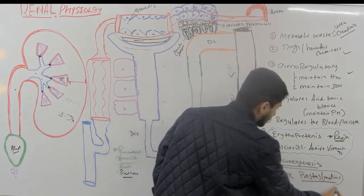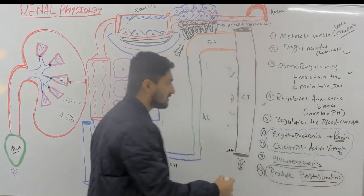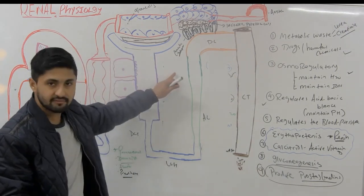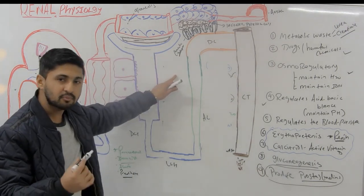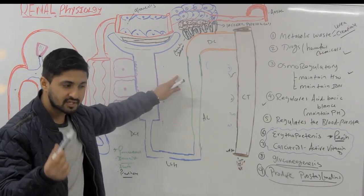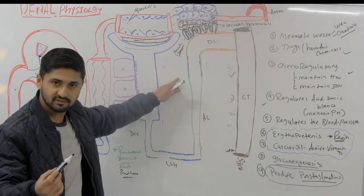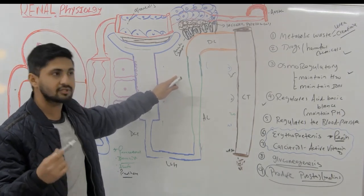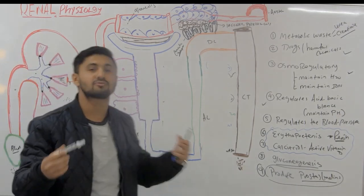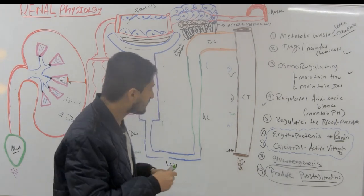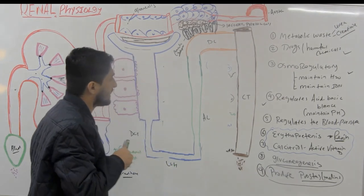The kidney also produces prostaglandins from endothelial cells located throughout the kidney. Prostaglandins are vasodilators and help maintain autoregulation of the kidney.